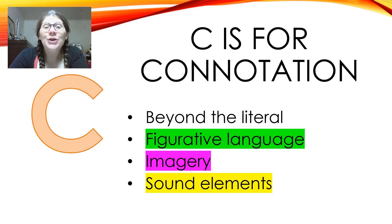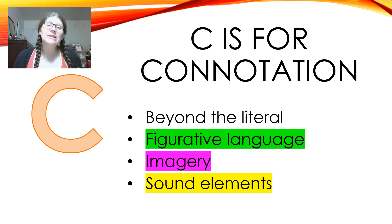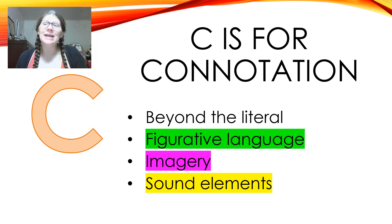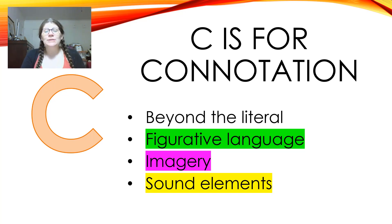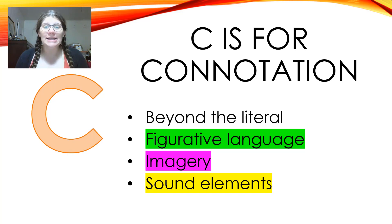The C of TPCAST is for connotation. This is the last step of episode one. Connotation is probably the most in-depth part of this poetry analysis. The paraphrase part is tedious — it takes a long time — but the connotation part requires more depth of thinking. You have to think harder about connotation than you do for the paraphrase. Connotation means beyond the literal. For the paraphrase, we translated the words of the poem literally. For connotation, you are trying to look for the abstract ideas in the poem.